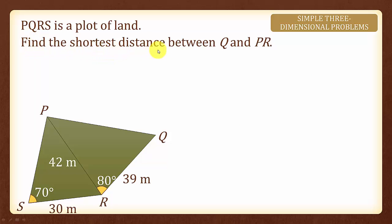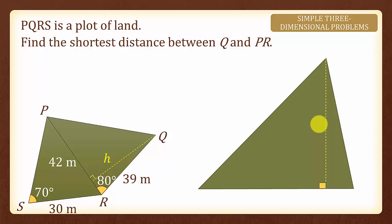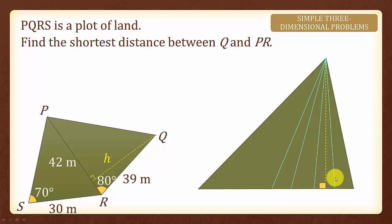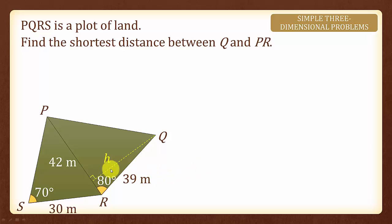Next, we are asked to find the shortest distance between Q and PR. The shortest distance is actually the perpendicular distance from point Q to the line PR, and we shall call this H. To understand why, consider a series of lines — the perpendicular line is definitely the shortest, because any other line would be the hypotenuse of a right triangle and therefore the longest side. So the shortest distance from Q to PR is always the perpendicular distance.